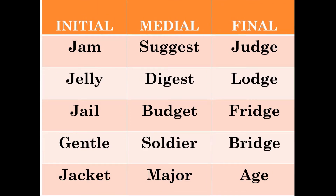/dʒ/ occurs initially in words such as: jam, jelly, jail, gentle, jacket. Medially in: suggest, digest, budget, soldier, major. And finally in: judge, lodge, fridge, bridge, age.